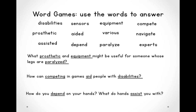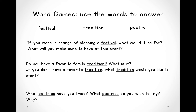I also asked you some questions last time so that you can use the vocabulary words in sentences. Today I'm going to ask you to do the same thing. Answer these questions using our three vocabulary words: If you were in charge of planning a festival, what would it be for, and what would you make sure to have at this event? Do you have a favorite family tradition — what is it, or what tradition would you like to start? What pastries have you tried, and what pastries do you wish to try? Go ahead and get a separate sheet of paper, write your answers in complete sentences, and when I see you on Wednesday you can share your answers with me.